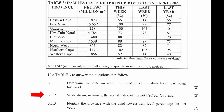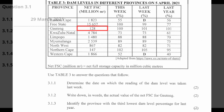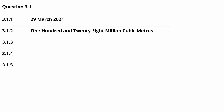Question 3.1.2: Write down in words the actual value of the net FSC for Gauteng. From table 3 we see that Gauteng has a net FSC of 128 million cubic meters, so this number can be written as one hundred and twenty-eight million cubic meters.